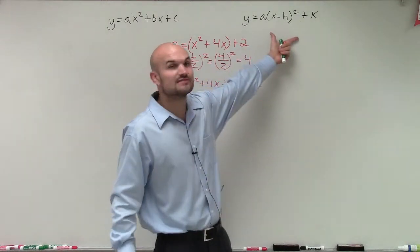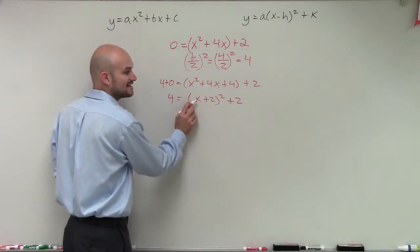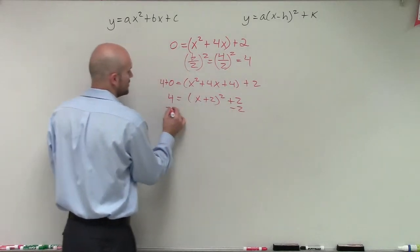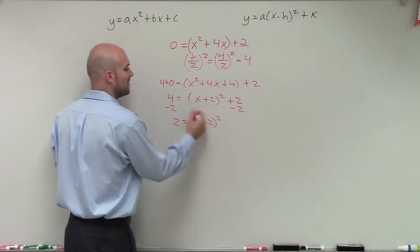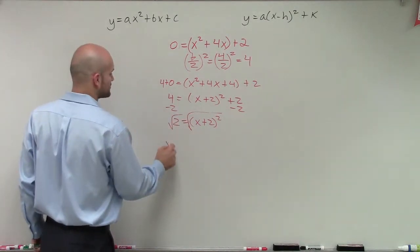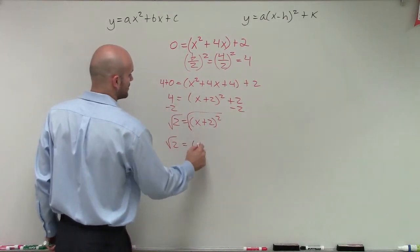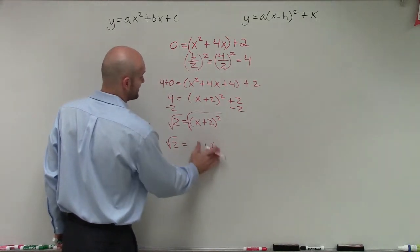And now you can see it's in this format, where now all I need to do is solve for this x by using my inverse operations. So I'll subtract 2 on both sides. I get negative 2 equals x plus 2 squared. Then I take the square root of both sides. And therefore, I have the square root of 2 equals x plus 2, just x plus 2.